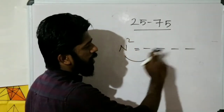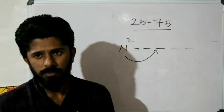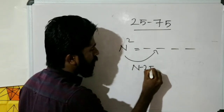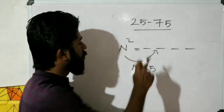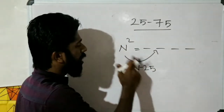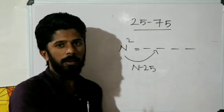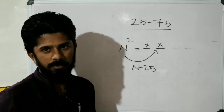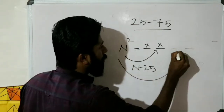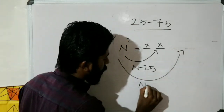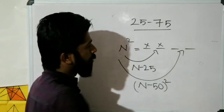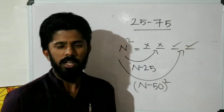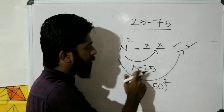The equations use place values: ones, tens, hundreds, thousands. We will do the first method: N minus 25. This is the N-25 method — take the number, subtract 25, and that gives part of the answer. Then we also use N minus 50, whole square.